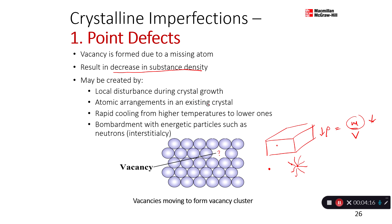Another reason is the atomic arrangements in an existing crystal — maybe the crystal is already formed and the rest is still liquid, and the arrangement is preventing the atoms in the liquid from fitting in certain places. Remember, this is a defect, so it does not happen in a large amount — only at local places. Another reason is rapid cooling from higher temperatures to low ones, which could also disrupt the process of forming a perfect crystal structure, resulting in defects. Finally, bombardment with energetic particles such as neutrons can also cause interstitial defects.